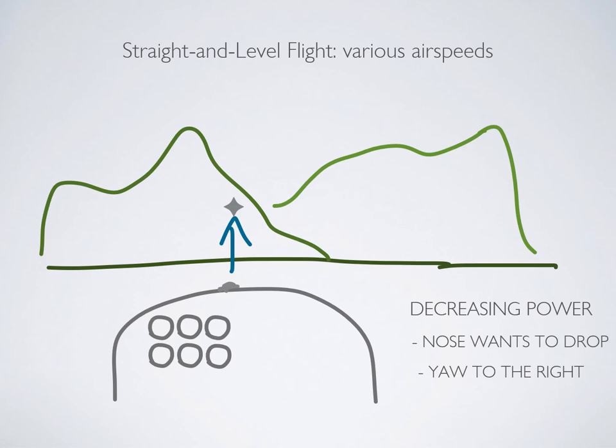The opposite is also true. When you decrease power from straight and level flight, the aircraft will nose down and it's going to have a slight yaw to the right. So if you want to fly straight and level at a lower power setting and a lower airspeed, you're going to need to pull back on the yoke while you decrease power and control for yaw.